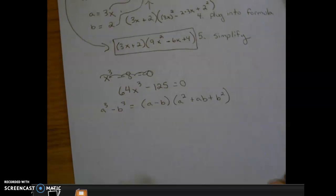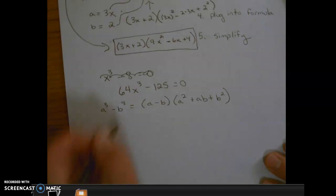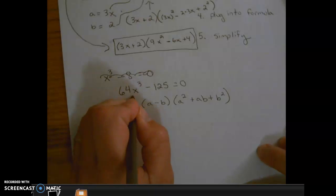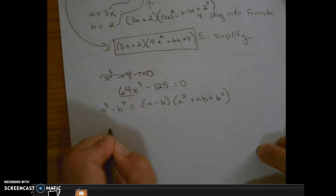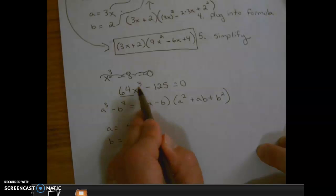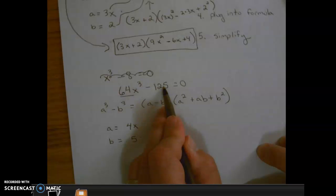Success criteria number three, find a and b. What number gives us 64? That's going to be 4, and x. What number gives us 125? That's going to be 5. Remember, 4 × 4 × 4 is 64, x × x × x is x³, 5 × 5 × 5 is 125. These are perfect cubes.